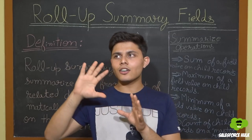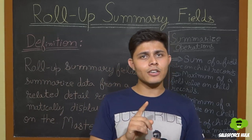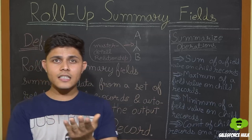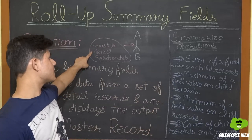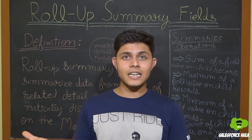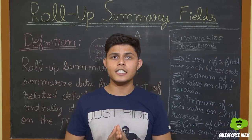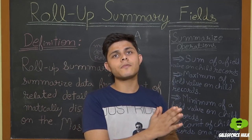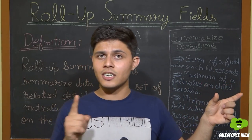If you're still confused about what Rollup Summary Fields are and when to use them, I'll give a simple example to explain it clearly. One important point: this relationship must always be a Master-Detail Relationship, because Rollup Summary Fields can only be created on the one-side object — that is, the Master — in a Master-Detail Relationship. We cannot create Rollup Summary Fields on the Detail Object, on the Child Object, or based on a Lookup Relationship Field.